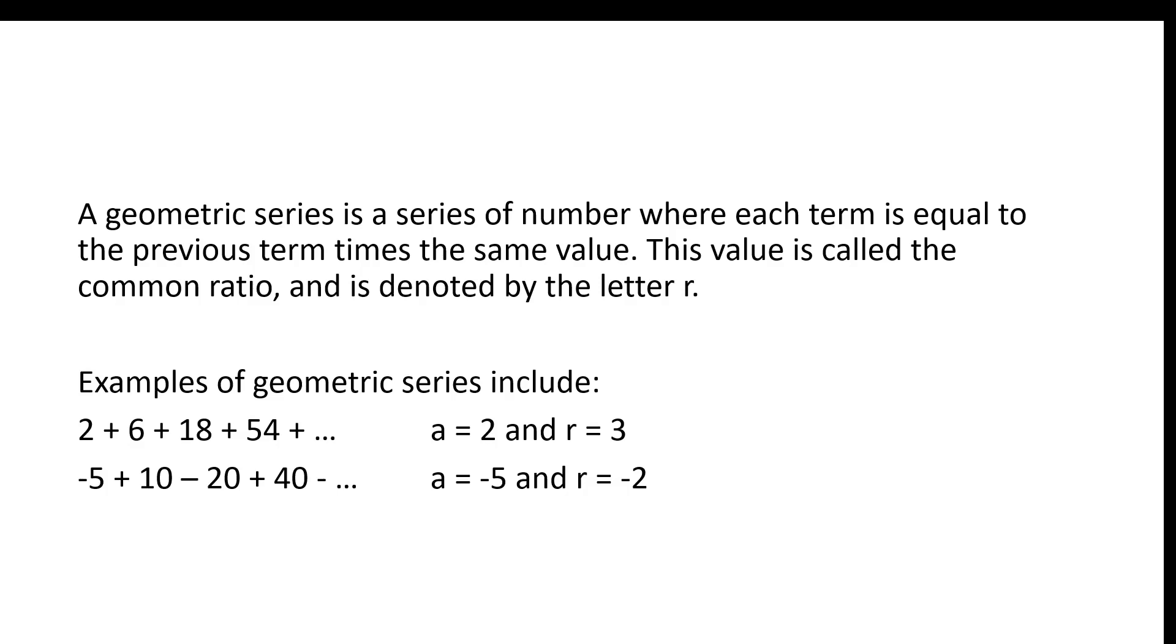Examples of geometric series include, as shown there, 2 plus 6 plus 18 plus 54, in which case A is 2, the first term, and R is 3, the amount multiplied by each term to get to the next one. Another series would be negative 5 plus 10 minus 20 plus 40. A is negative 5 and R is negative 2.